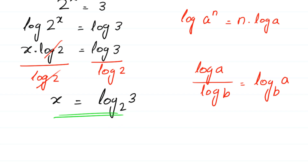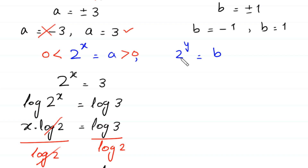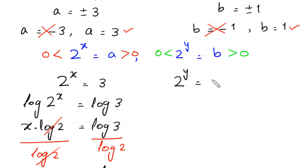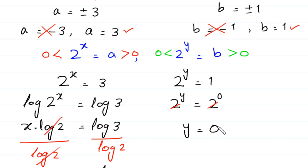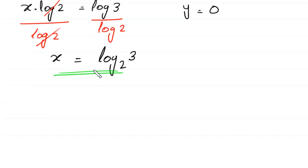Now we find the value of y. From here, 2 to the power y is greater than 0, so b must be greater than 0. We reject b equals negative 1, and only accept b equals positive 1. Putting this value into the equation: 2 to the power y is equal to 1. We can write 1 as 2 to the power 0. Since the bases are the same on both sides, the 2 cancels and y is equal to 0.